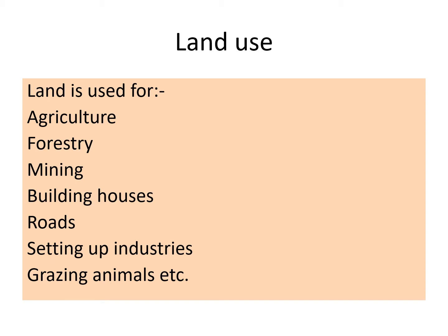Land is put under various uses, which is known as land use pattern of an area. We make use of land for agriculture, forestry, mining, building houses, infrastructure, roads, setting up industry and grazing animals, etc. India has maximum land under agriculture.